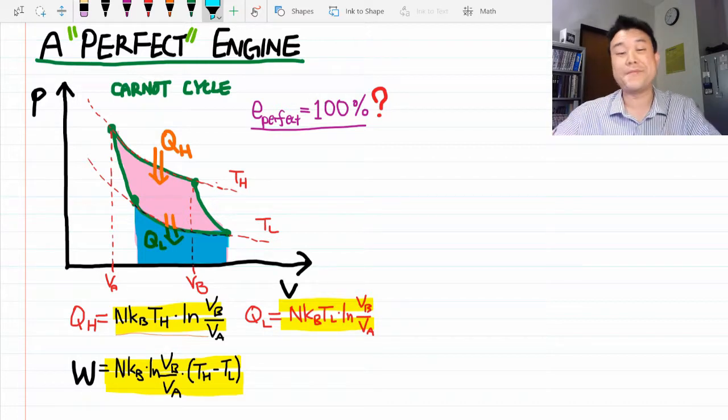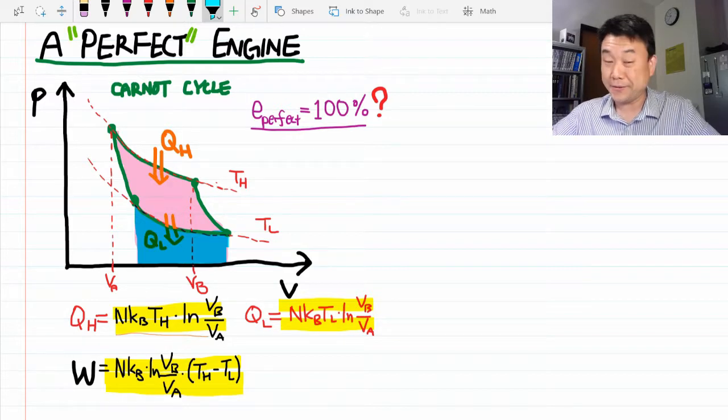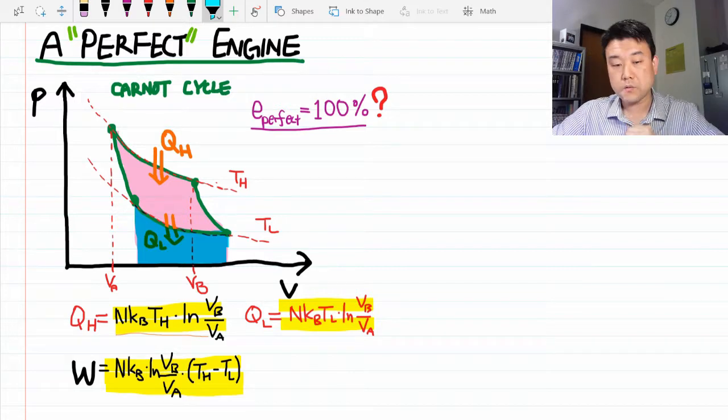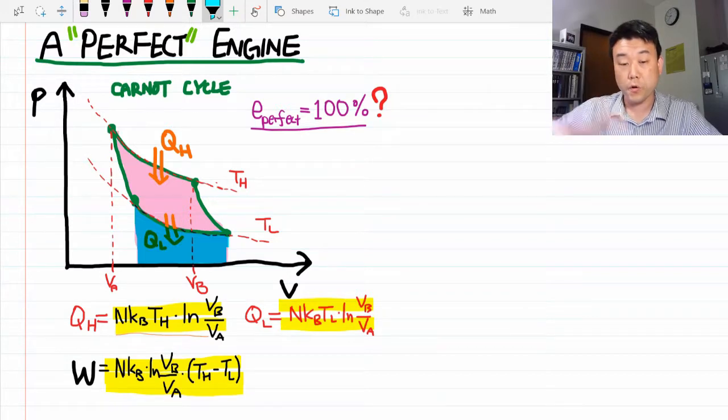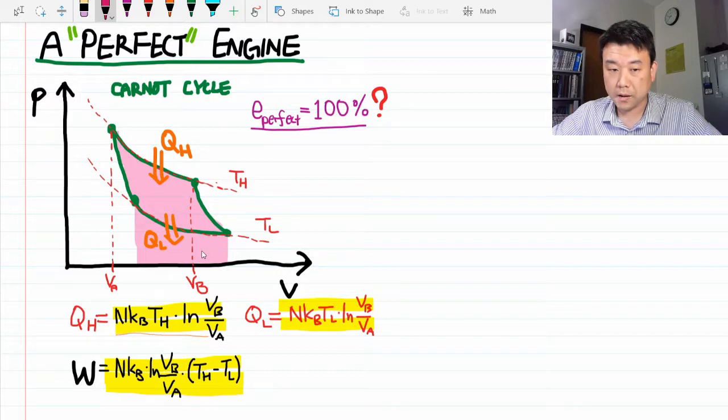Now, let's dream about changing this Carnot cycle that we know. Here's how I imagine a perfect engine could be built. We could try to avoid all this negative work being done, the work being done on the gas. Let me try this. So we follow the Carnot cycle from A to B, then to C.